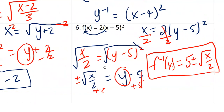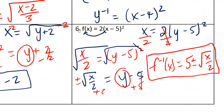Number six is probably the toughest. Switch x and y. Start with the multiplication — the opposite is division — divide by 2, giving x/2 = (y − 5)². Take the square root to get rid of the square, which creates a positive and negative: ±√(x/2) = y − 5. The opposite of subtracting 5 is adding 5, so the inverse equals 5 ± √(x/2).